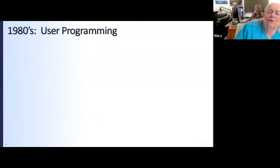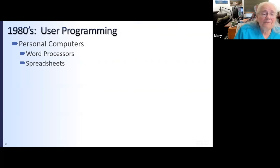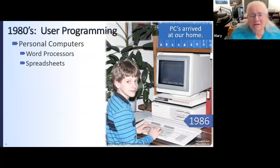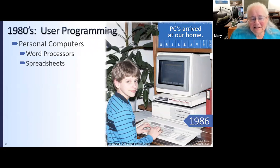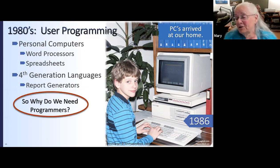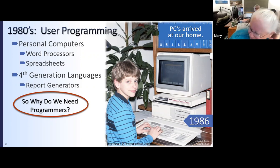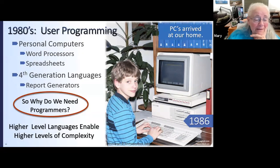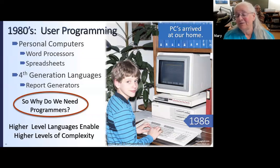The other thing that happened in the 80s was user programming. That's when personal computers came in. Also in the same decade we had all these great fourth-generation languages and report generators. Everybody said, who's going to need programmers anymore? These fourth-generation languages will solve all our problems. And it just made a mess. As Dijkstra said, higher-level languages enable higher levels of complexity, and there's always a point at which it's too complex and people have to get in and figure out how to think. No matter how many layers of abstraction you get to, you still get to the edge of the complex system and have to be able to think.